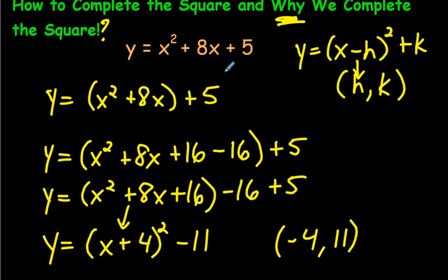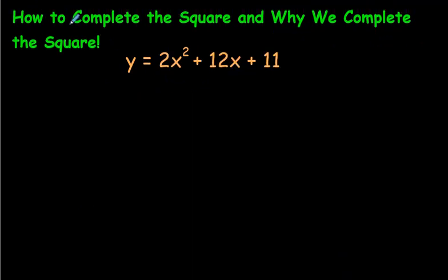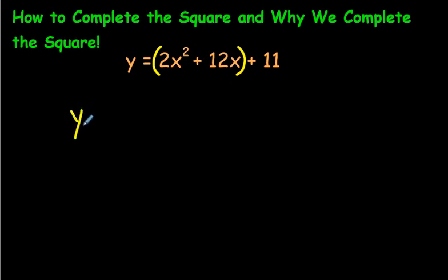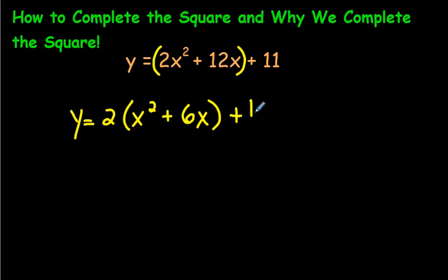We're going to practice this two more times. The next question has a coefficient of 2 in front. Before putting the brackets, we're going to get rid of this coefficient of 2 — we're going to factor it out, dividing everything inside by 2 to keep things the same. So I'll write on this side. I'm just factoring out that 2: 12 divided by 2 is 6. And here's our plus 11. So if you were to multiply this all out, you would get right back to the original.